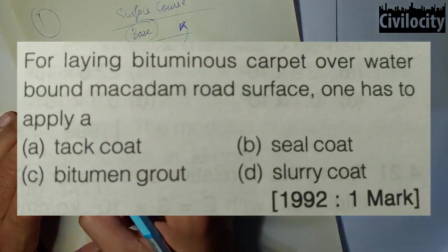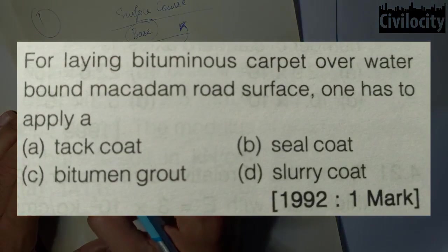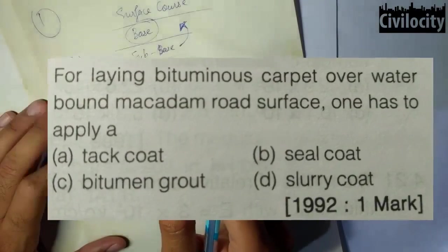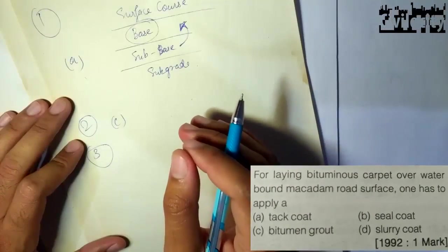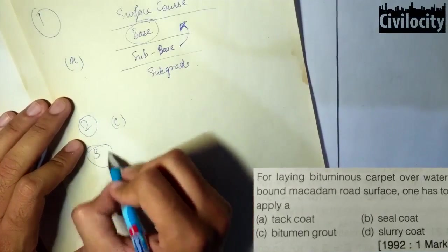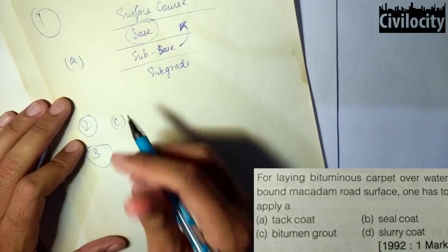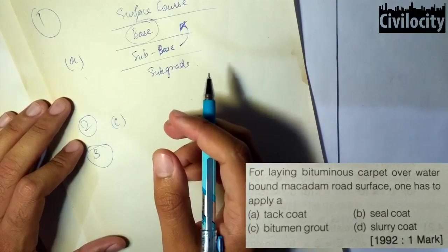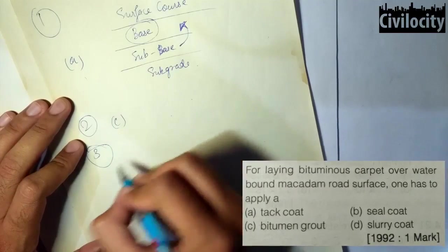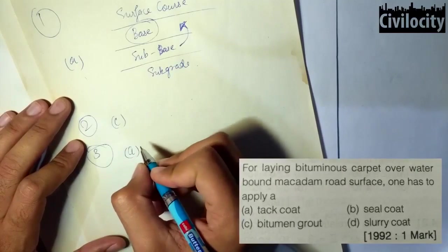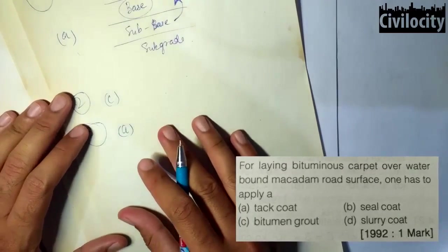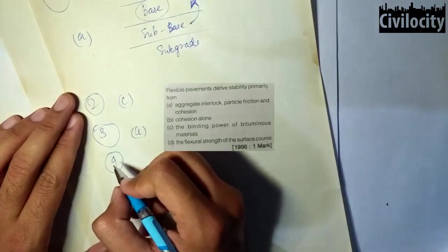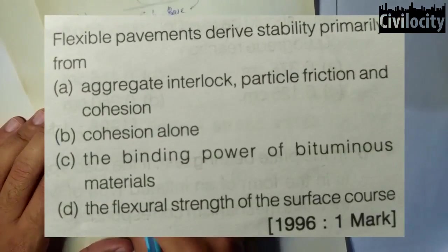Our third question: for laying bituminous carpet over a water-bound macadam road surface, one has to apply — tack coat, seal coat, bitumen grout, or slurry coat? The first option, tack coat, is correct. Tack coat is a layer of bituminous material used for waterproofing purposes.